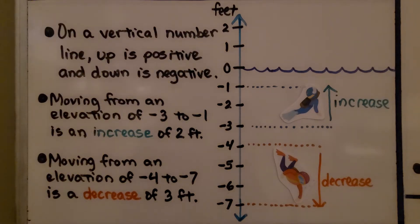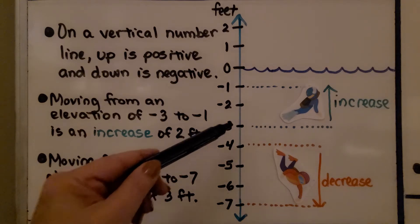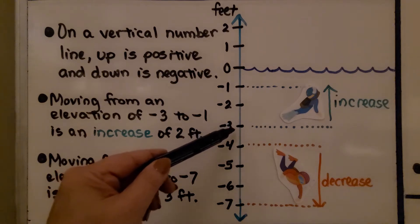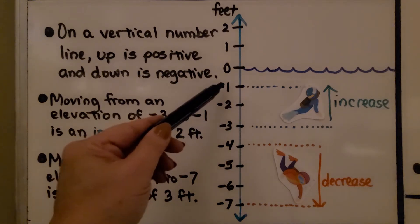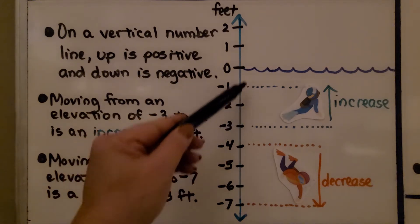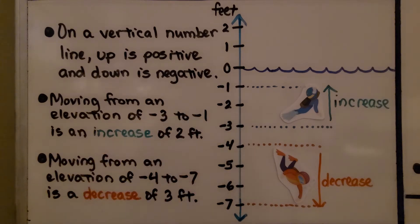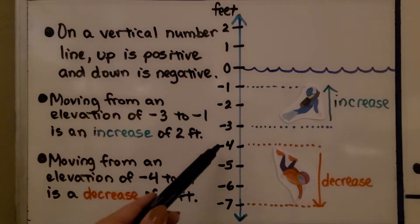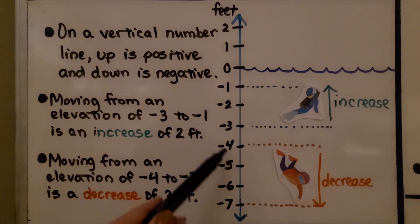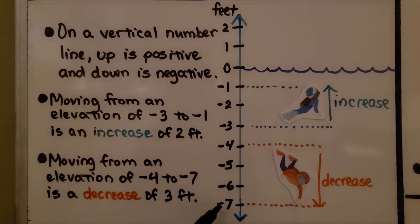Moving from an elevation of negative 3 to negative 1 is an increase — it is going up. Moving from an elevation of negative 4 to negative 7 is a decrease of 3 feet. We are going down.